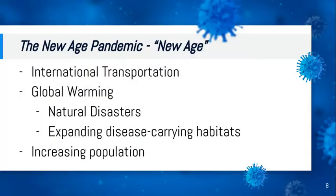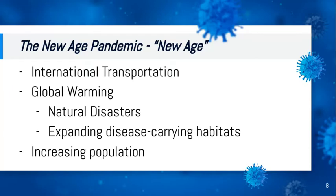Of course, I can't talk about diseases and global health without mentioning the chances of a pandemic happening. The New Age pandemic is a very dangerous version of a historic pandemic because now we have international transportation and global warming, which splits funds between medical and natural disasters and also causes disease-carrying organisms' habitats to expand. Our ever-increasing population puts us more at risk, since people in dense areas are more likely to spread a huge pandemic.